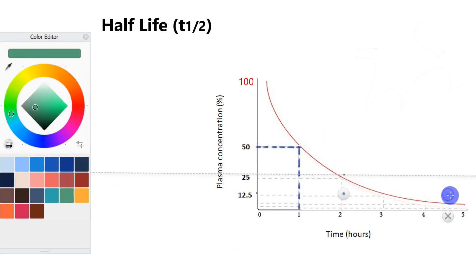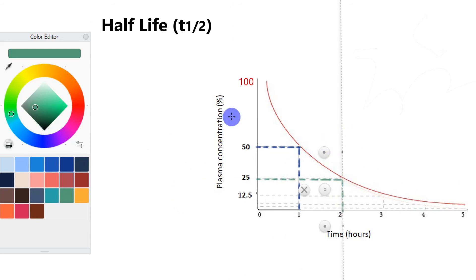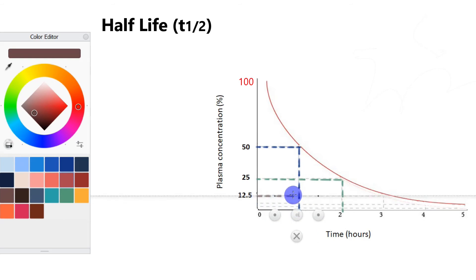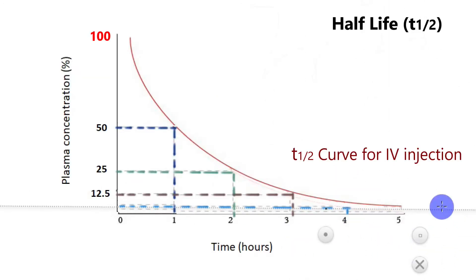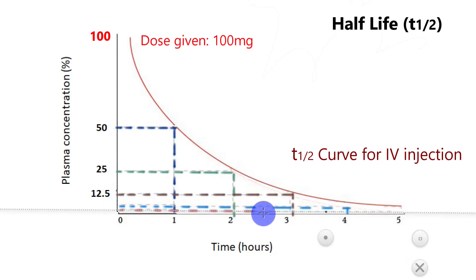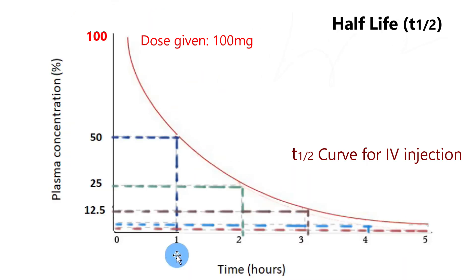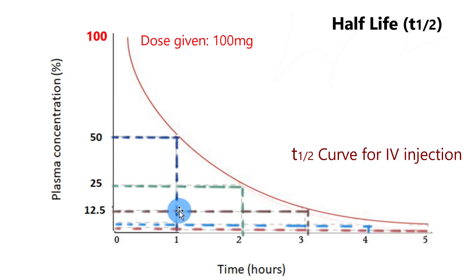Let's draw and connect lines on the graph. If the half-life of a drug is one hour and we have given 100 mg, then when the first hour has elapsed, there will be 50 mg — or 50% — of the drug left in the plasma. That means one half-life has elapsed. After a second hour — two hours in total — we will have 25 mg, or 25%, of the drug remaining in the plasma.